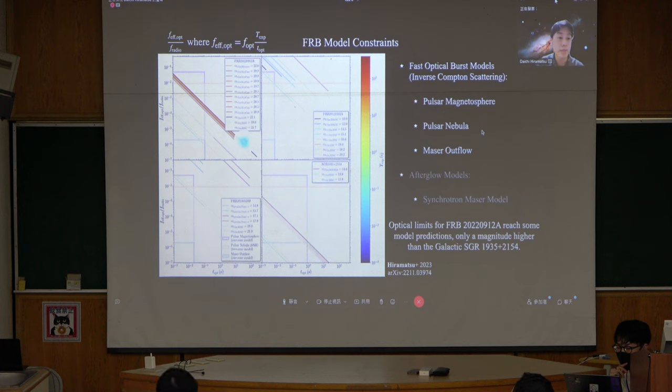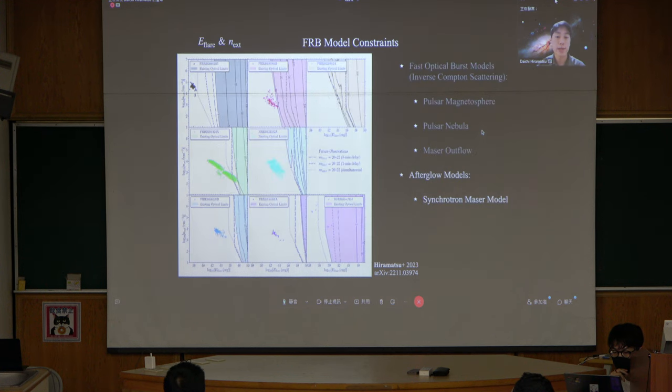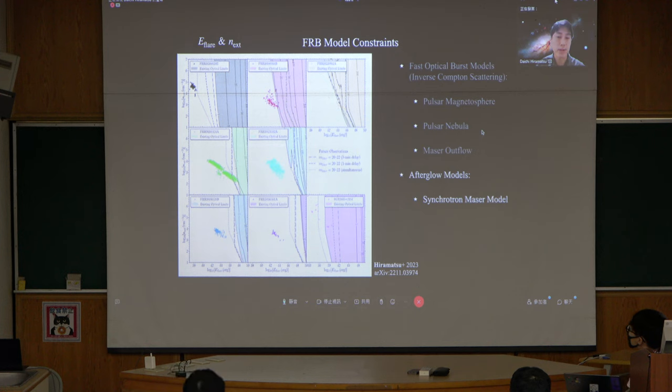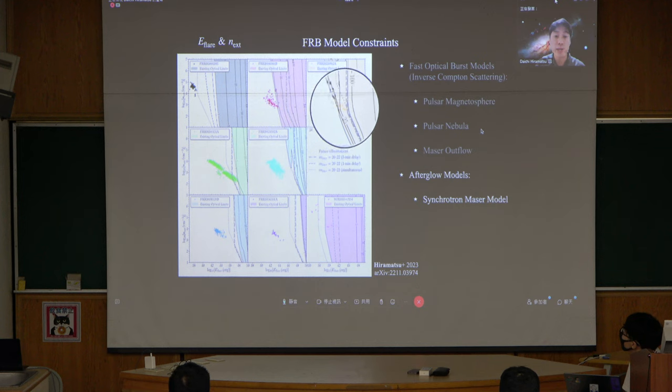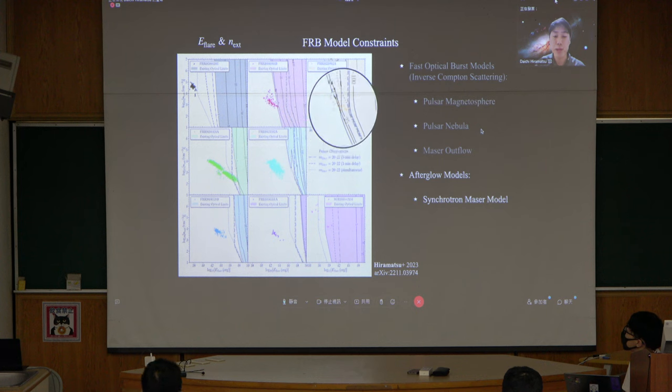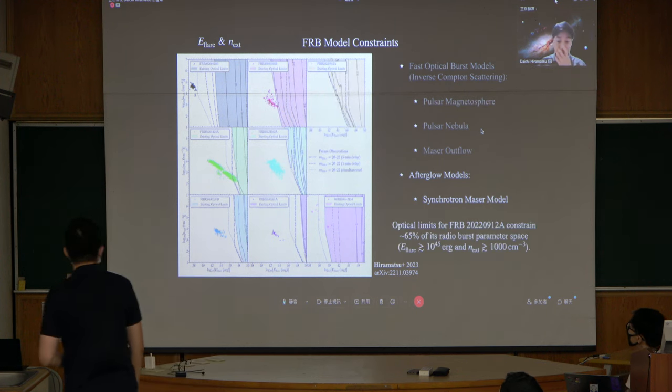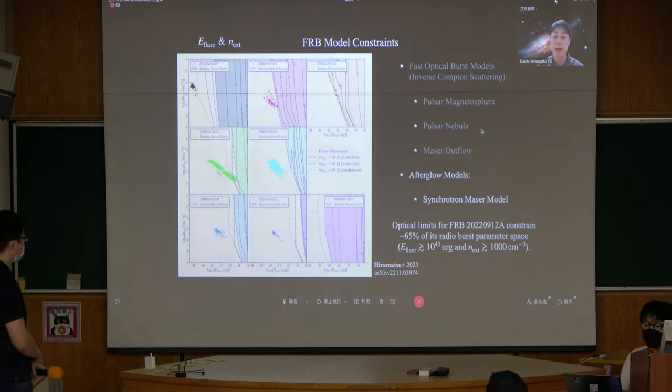If this Binospec observation was indeed simultaneous, this proves the same order of magnitude as the galactic magnetar. We can also compare this with the afterglow models, like synchrotron maser model that I mentioned. Here I'm showing external density versus the flare energy. For 2022-0912A, these points show the estimates from the FRB radio bias itself, and the shaded regions show the parameter space ruled out by the optical limit. The limits for the FRB constrain 60% of these radio bars parameter space.